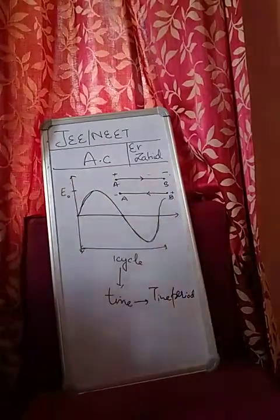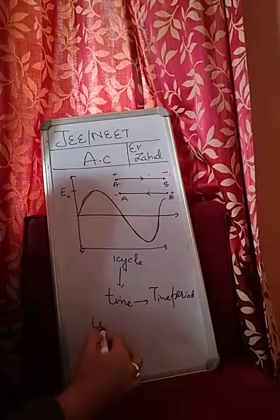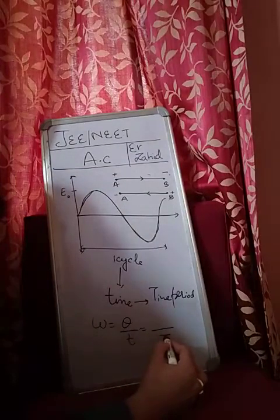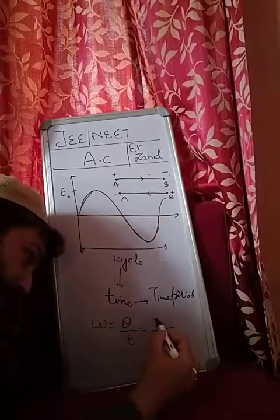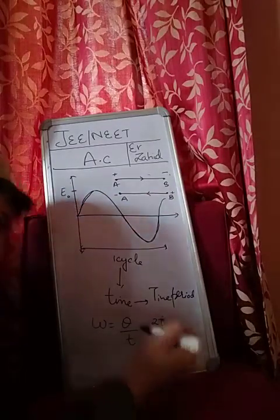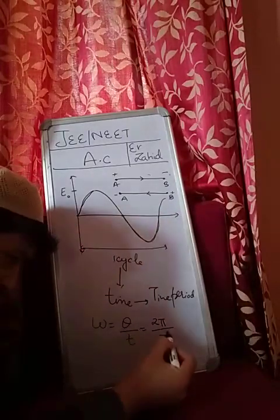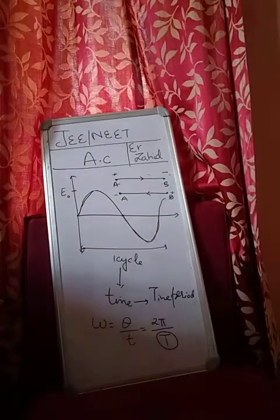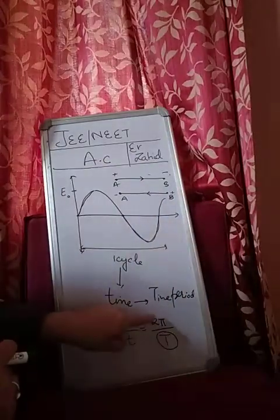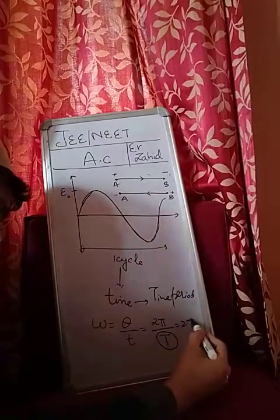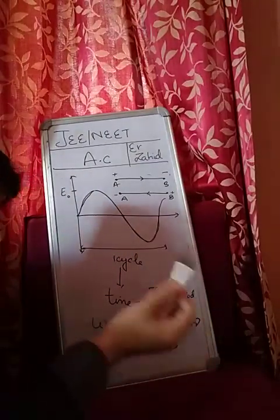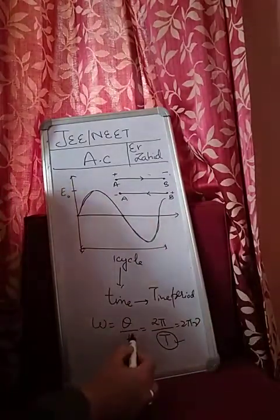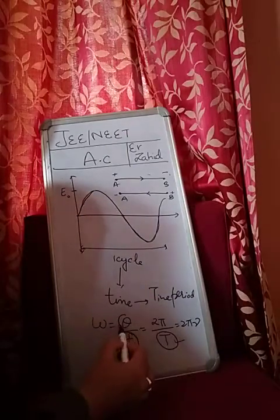As you have written, omega is equal to theta by t. If you replace small t with capital T, then theta becomes what? This is a very important point. Then theta becomes 2 pi, because when small t is replaced by capital T, it means one complete time period. One complete time period means one cycle, and one cycle means 2 pi. Then you write omega as 2 pi by T. Omega can also be written as 2 pi nu. This is only possible when the time is the time period. If this is some different instant of time, then you have to write theta by t.